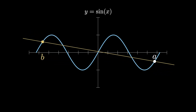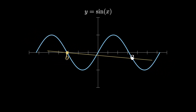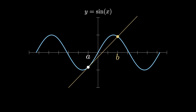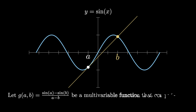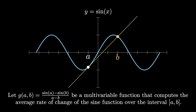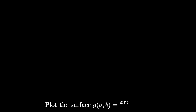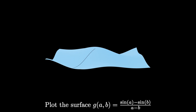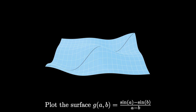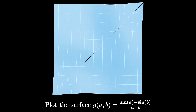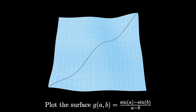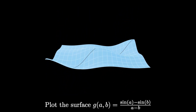We can compute the slope of the secant line for any two inputs A and B, as long as A and B aren't the same. This means we can build a multivariable function g, which takes in two inputs A and B and outputs the average rate of change: sine of A minus sine of B, all over A minus B. This multivariable function creates a two-dimensional surface plot. Here's a representation of the surface plot for g of A and B equals sine of A minus sine of B over A minus B. Notice we can't plug in A equals B, so we have a collection of discontinuities along the line A equals B.